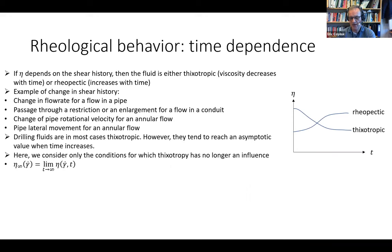Even without changing flow rate, passing through a restriction or enlargement — for example each time we pass through a tool joint or in the annulus around the tool joint — there will also be a change in shear history, so thixotropic effects will influence results, and viscosity will take some time before returning to normal values. Rotational velocity changes in annular flow or bilateral movement also influence the shear history and therefore the viscous behavior of the fluid.